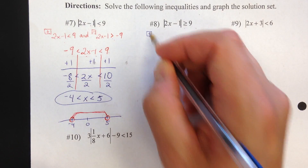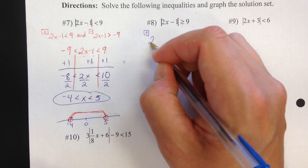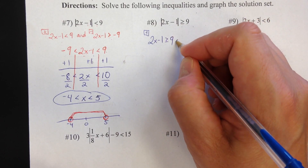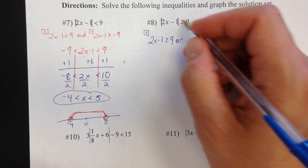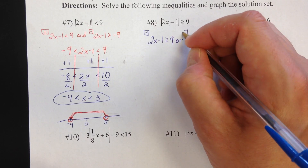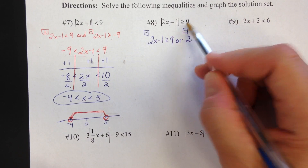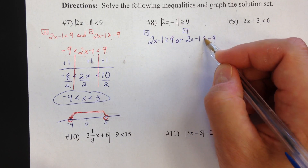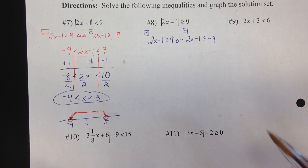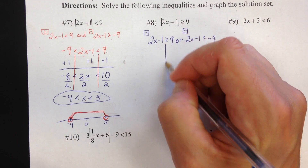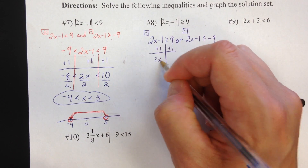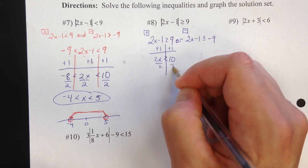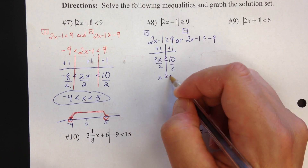So I'm going to set this up: positive case — 2x minus one greater than or equal to nine, nothing changes. Or 2x minus one — here's the negative case. I'm changing this nine to a negative nine, so I have to change my symbol to less than or equal to. Let's go ahead and solve it. We'll go plus one, so 2x is greater than or equal to ten, then divide by two, and we get x is greater than or equal to five.